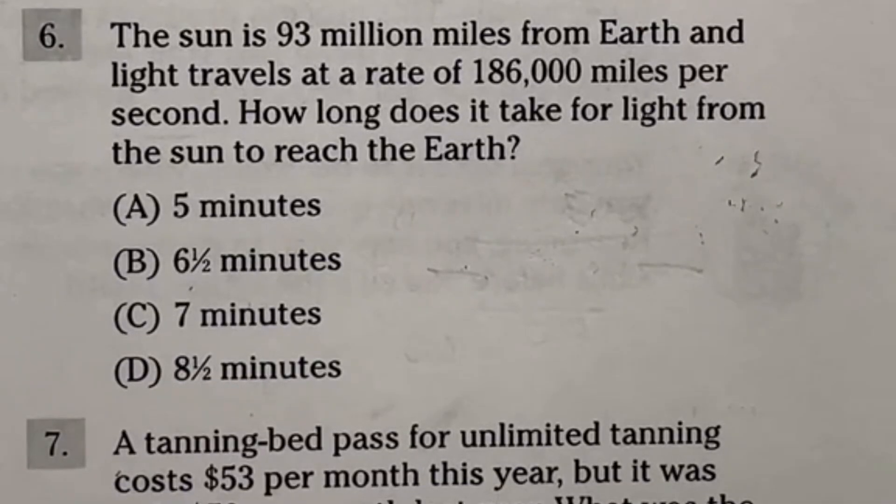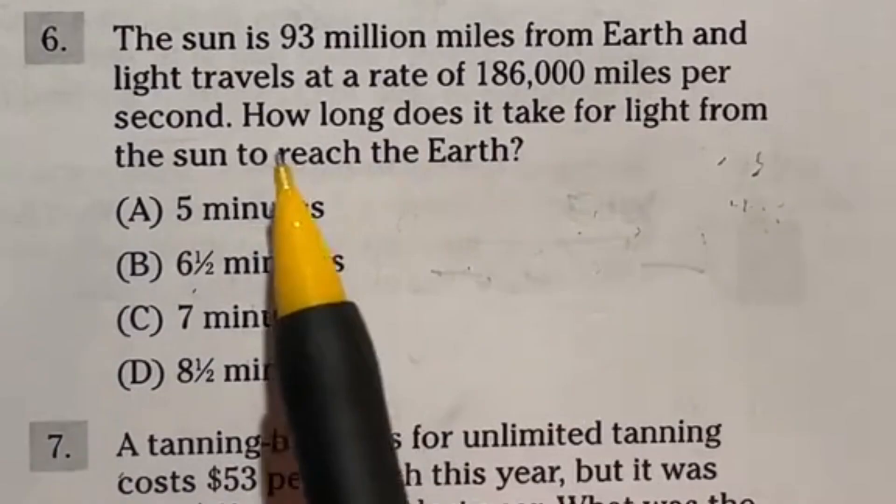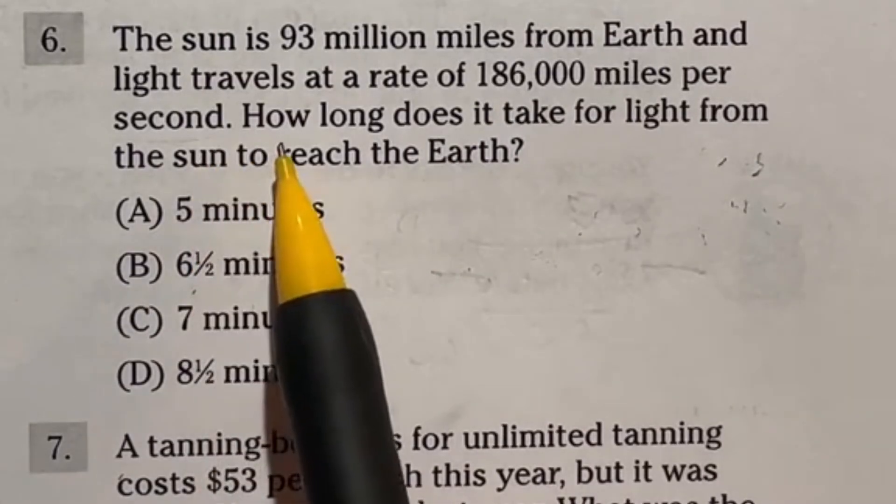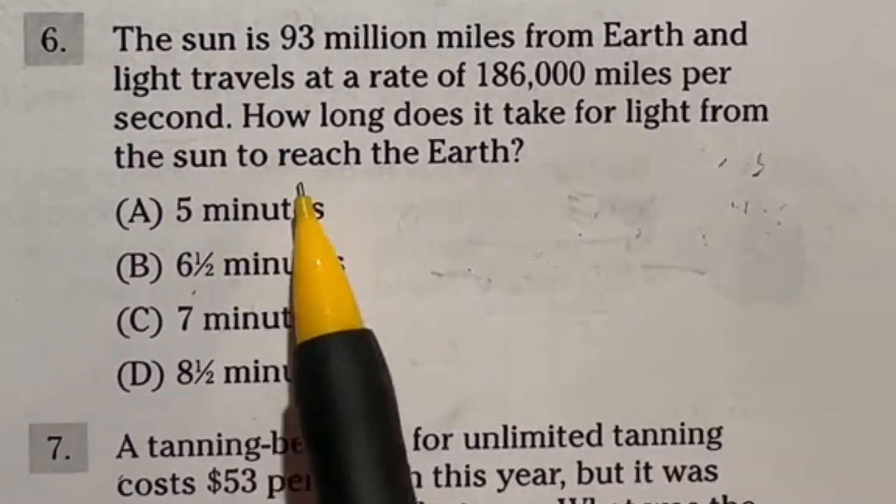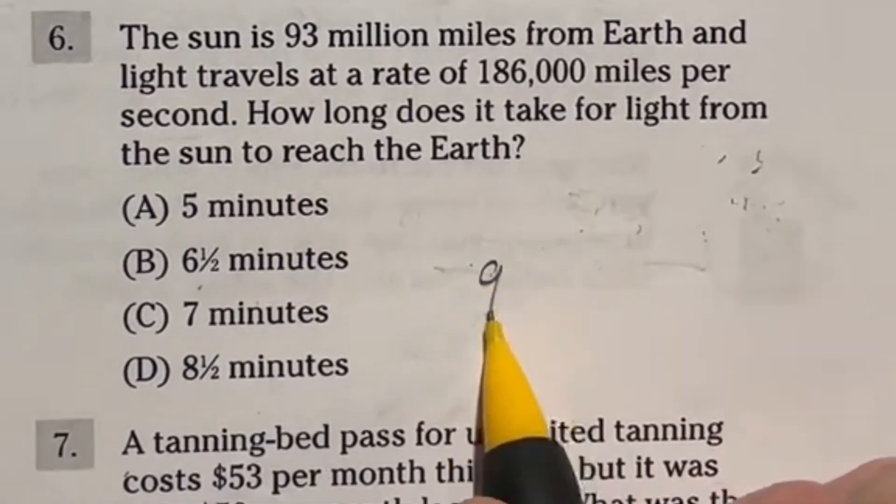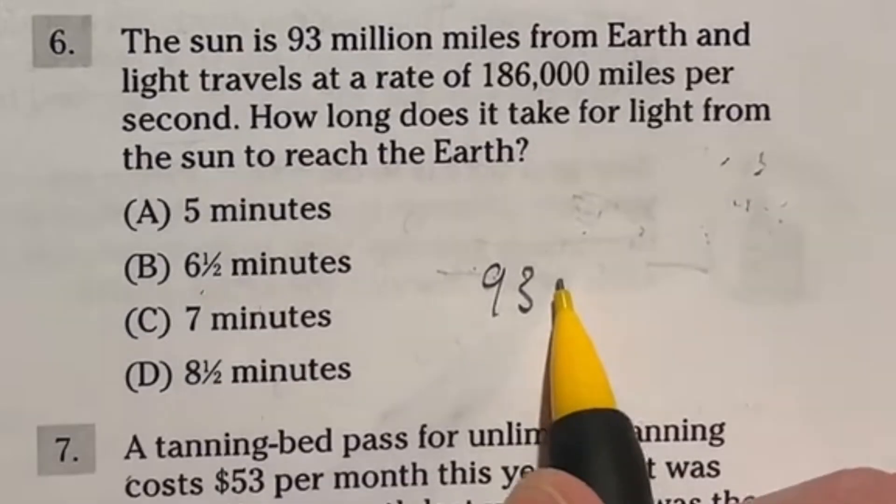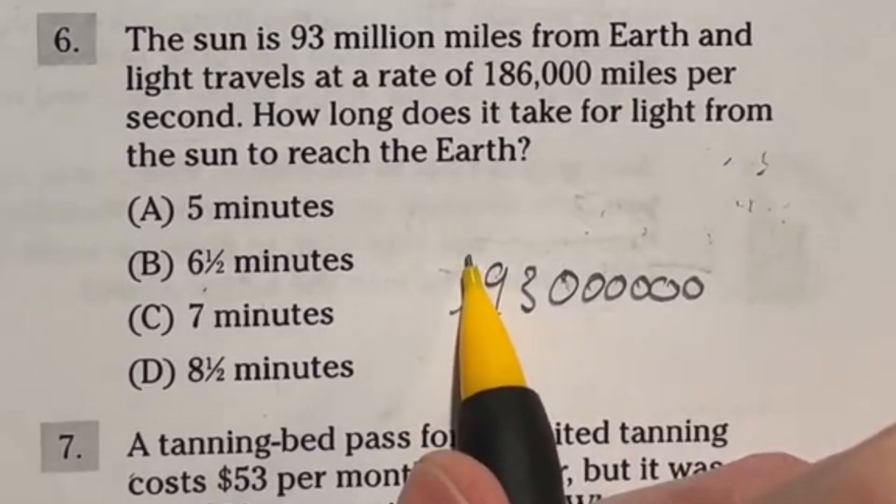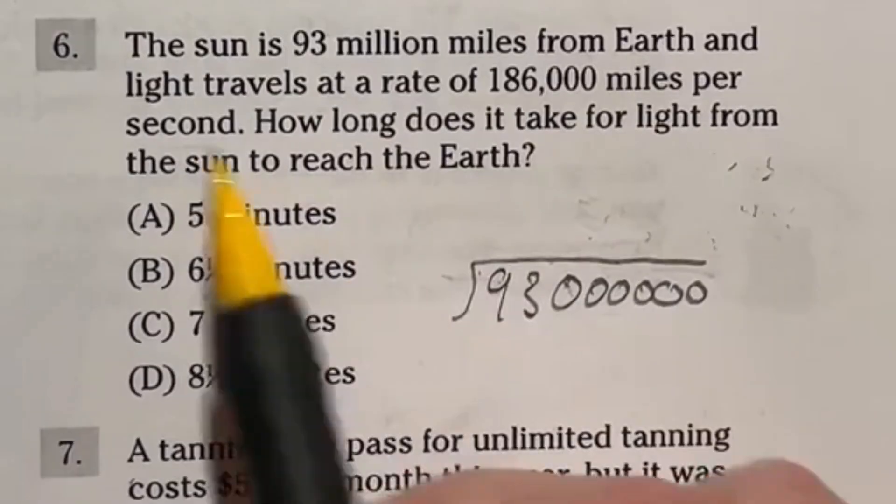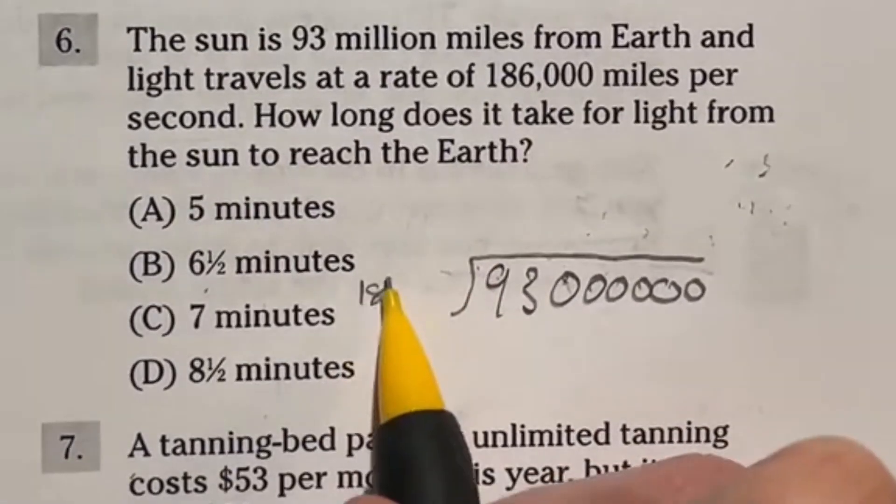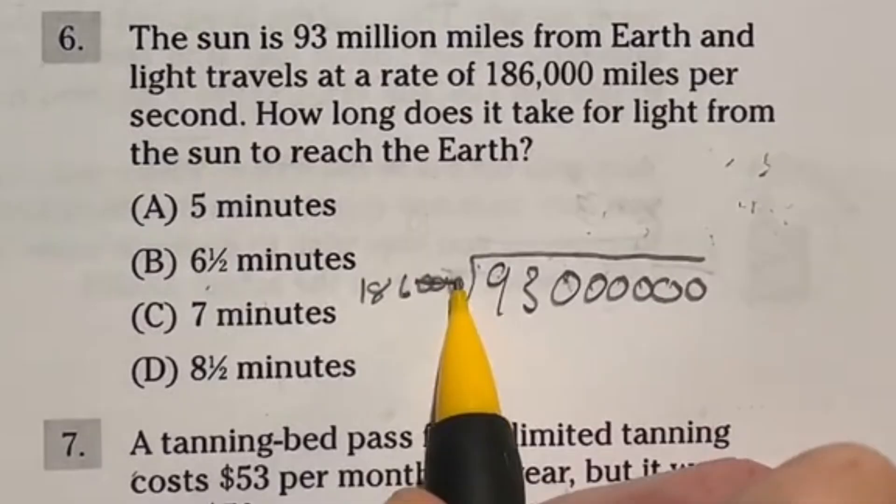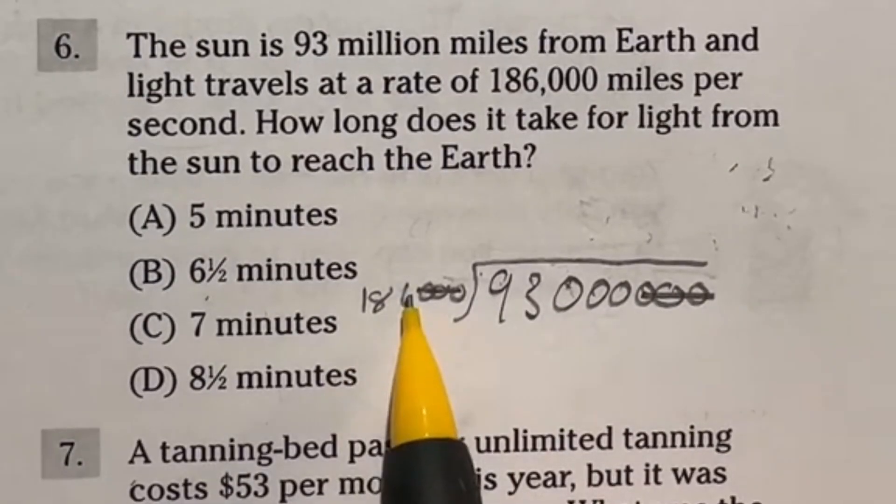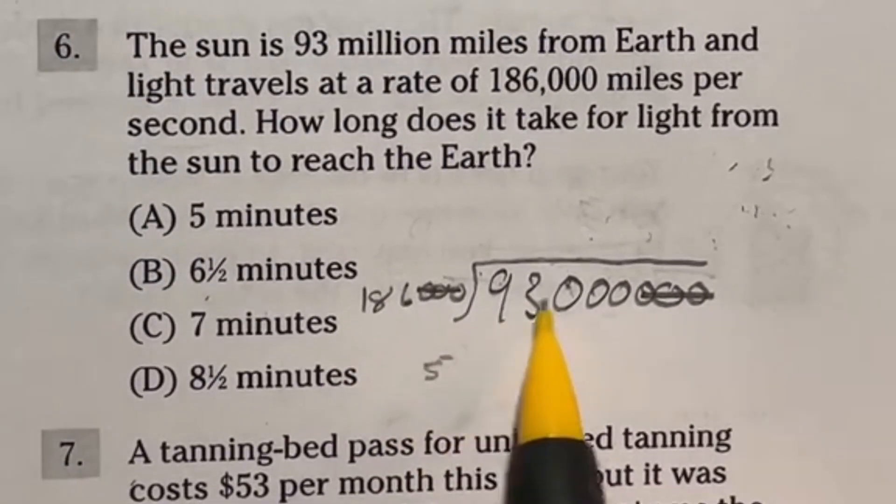Guys, we got a lot to talk about with number six. It says the sun is 93 million miles from earth and the light travels at a rate of 186,000 miles per second. How long does it take for the light from the sun to reach earth? So here's the deal. We got a total of 93 million, which is six zeros after that. And we're going to be dividing that because it's how many miles per second. So we're going to divide that by that 186,000. Now here's the deal. These three zeros will cancel out with these three zeros, leaving us with this.